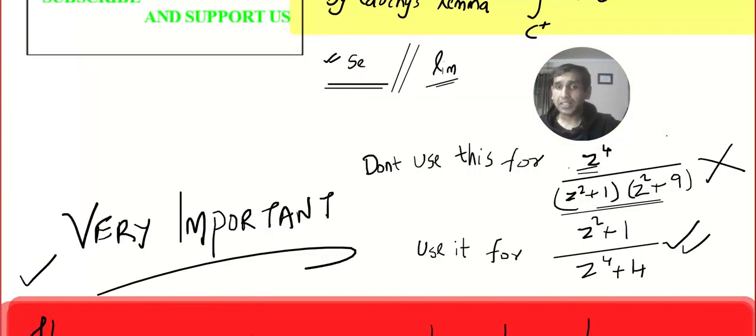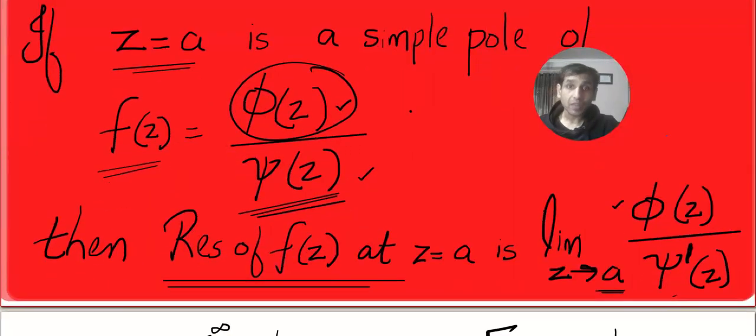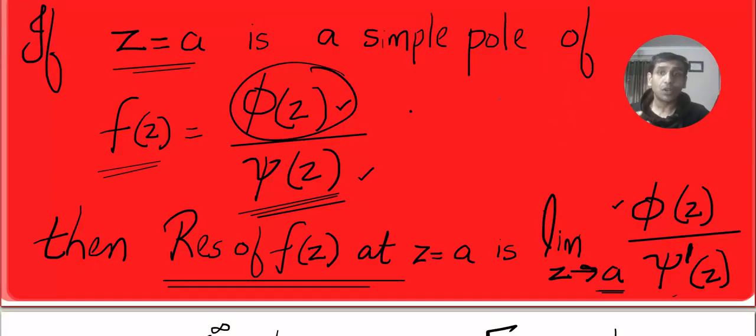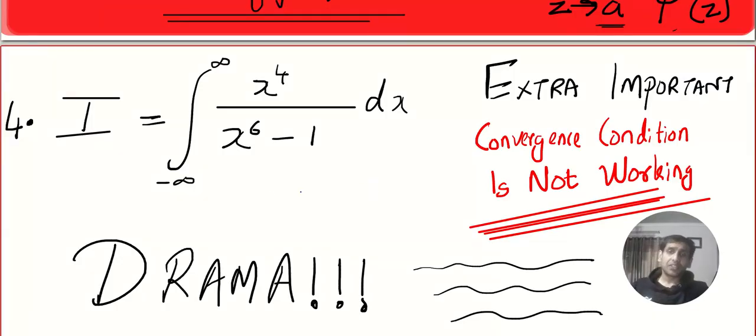Now we are going to learn something extra important. I hope you know the three methods to calculate poles. What is the first method? Series expansion. What is the second method? Limit—that's the most important method. And this method can be used only for polynomial by polynomial, we saw that in the last video.